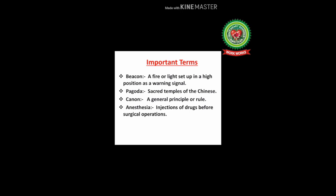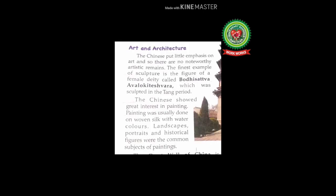Number two: pagoda — sacred temples of the Chinese. Number three: canon — a general principle or rule. Number four: anesthesia — injection of drugs before surgical operations. Now let's read the seventh main feature of the Chinese civilization, that is art and architecture.